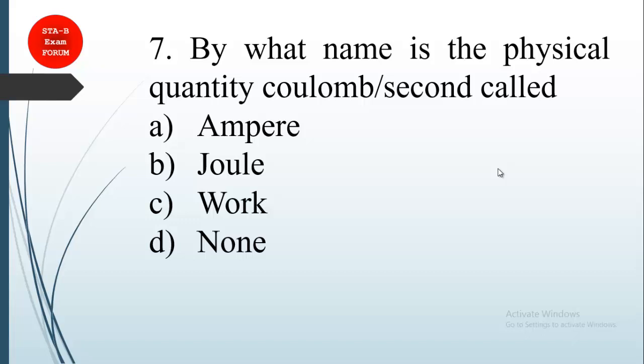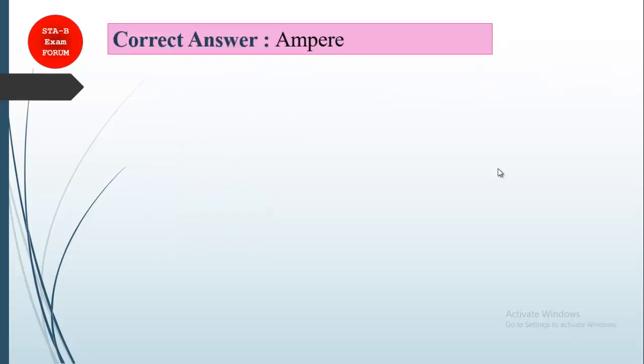Coming to the next question: by what name is the physical quantity Coulomb per second called? This is very simple. As you know, current is measured in ampere and is generally denoted by Coulomb per second. So the correct answer is option A, ampere.